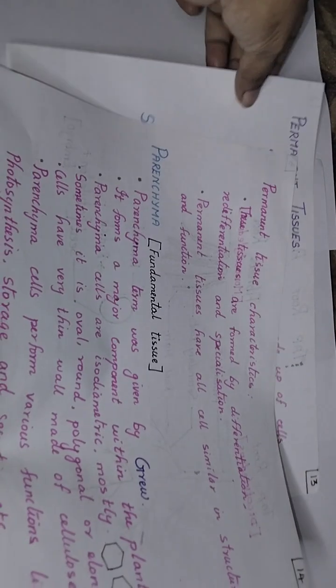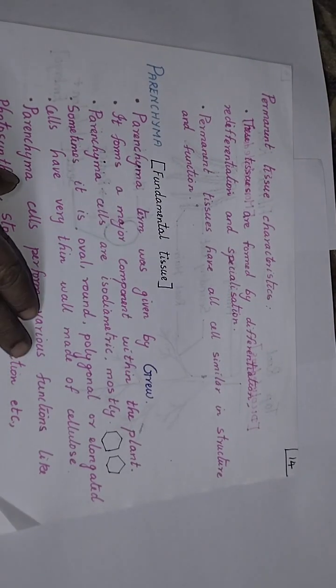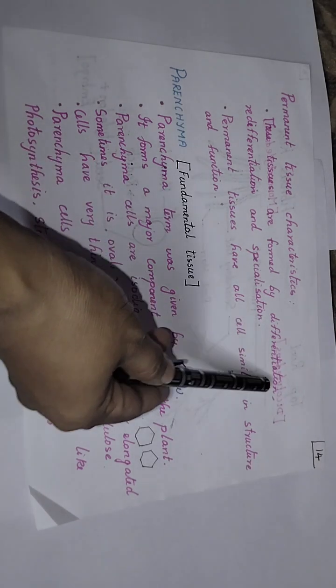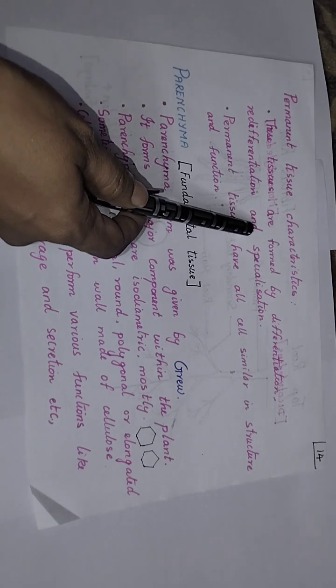Permanent tissues are formed by differentiation, redifferentiation, and specialization. Permanent tissues have all cells similar in structure and function — make note that these tissues have cells that are similar in both structure and function.